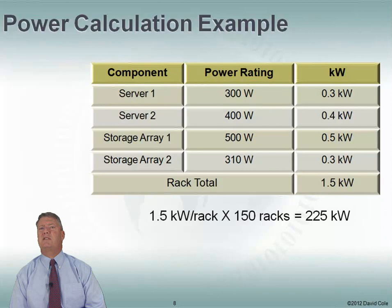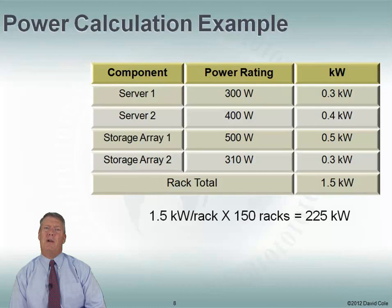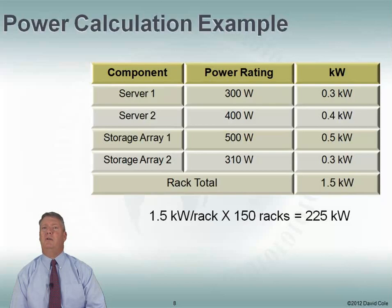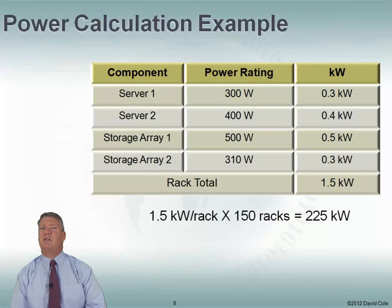Let's put this together in a grid, and ideally we want to do this on a rack-by-rack basis. If we've got a standard rack and spend a little time figuring out how much power it's going to draw, and most of our racks are going to be the same, it makes our calculations much easier. For example, let's say we have a couple of servers and a couple of storage arrays — total at this rack is one and a half kilowatts. With 150 racks, that gives us 225 kilowatts. But this is only our critical load.